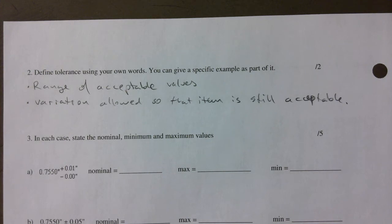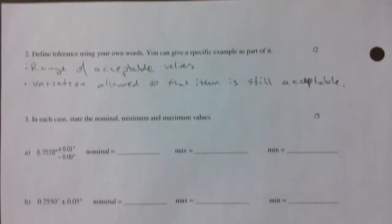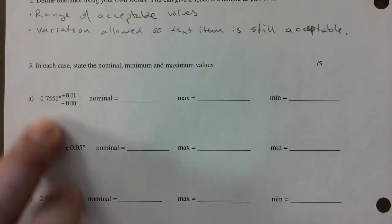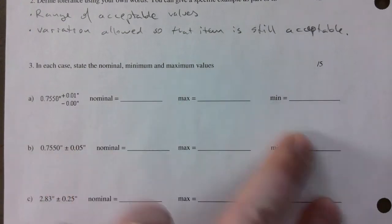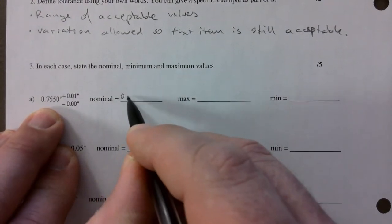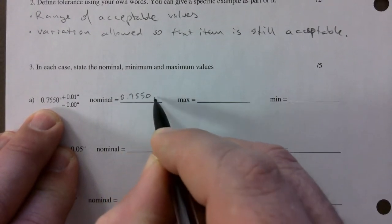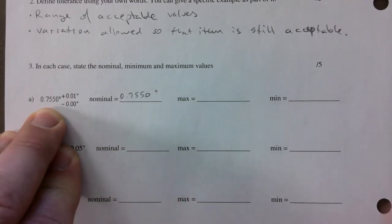In each case, state all these four values. Nominal is 0.7550, you can do this in inches.